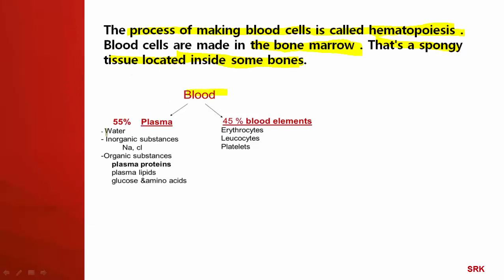The blood is composed of two components: the plasma and blood elements. Blood elements — also called formed elements — are erythrocytes (another name for RBCs), leukocytes (another name for WBCs), and thrombocytes (another name for platelets). The plasma contains maximum water, inorganic substances like sodium and chloride, and organic substances like proteins, lipids, glucose, and amino acids.